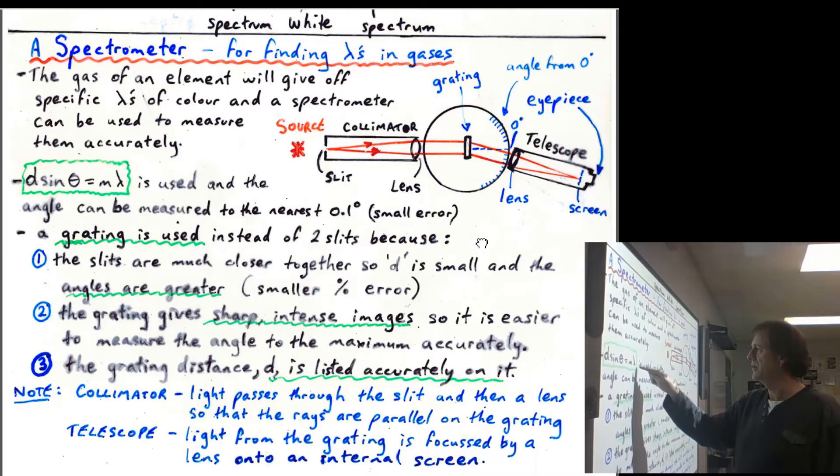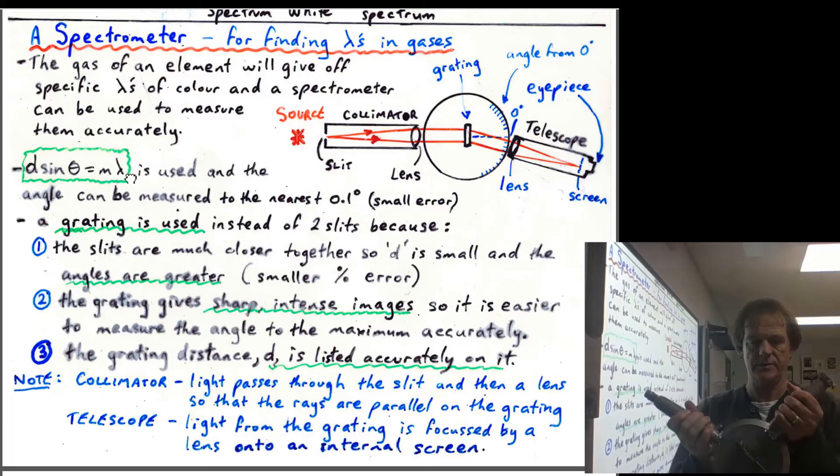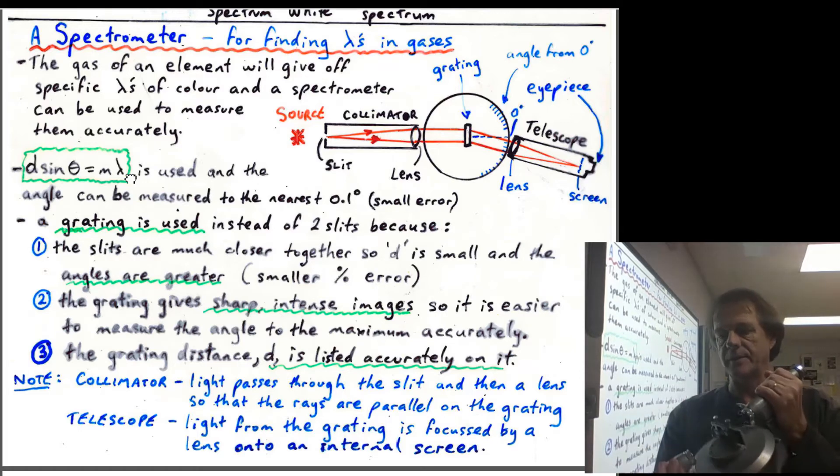So you can work out wavelength by using the angle. Now you can measure the angle on one of these. You've got your diffraction grating in the middle, it goes through a single slit there, and then you've got your telescoping thing here. And you normally cover this up with a dark cloth or something so that you can actually see this fairly well.